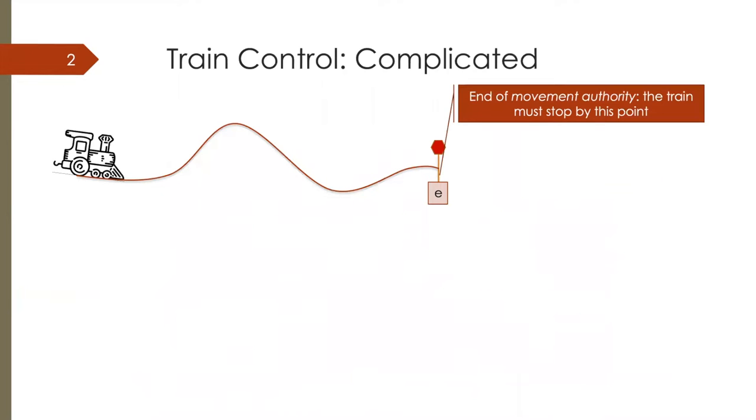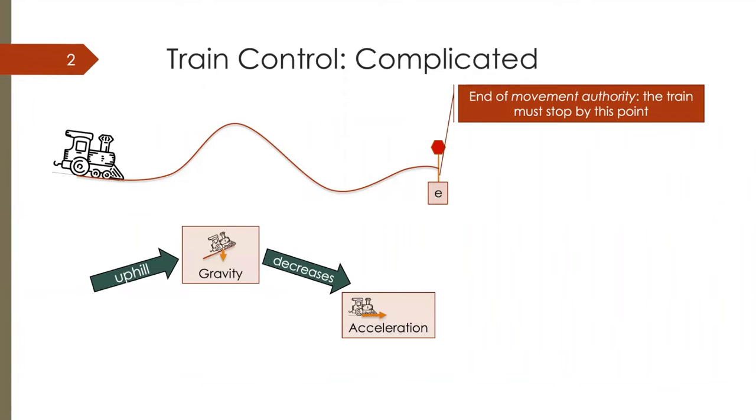Train control is hard because train motion is complicated. A lot of forces interact subtly. For example, if the train is going uphill, gravity decreases acceleration. This decreases resistive force, which in turn increases acceleration, all while air pressure brakes ramp up gradually with time-dependent behavior.